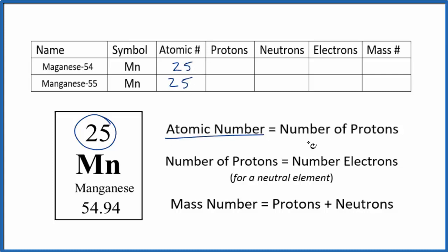The atomic number equals the number of protons. So we can also write 25 in for the protons. Each isotope, manganese-54 and manganese-55, both have an atomic number of 25 and 25 protons.